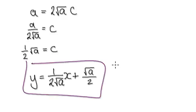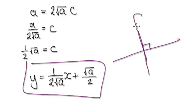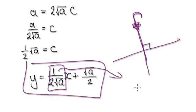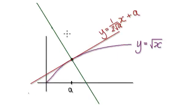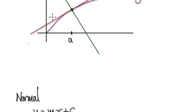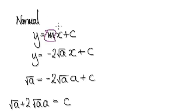We want something that's at 90 degrees to our tangent line. We need to extract the gradient of this line, then take the negative reciprocal of it. So our normal line — we know the gradient would be minus 2 root a.